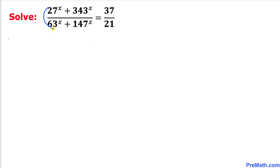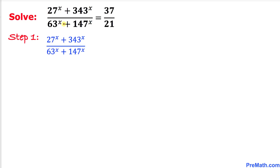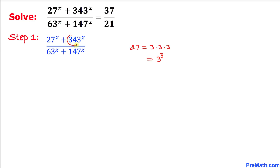Let's focus on the left hand side of this equation. We are going to manipulate the numerator and the denominator. First, 27 equals 3 times 3 times 3, which is 3 to the power 3. Next, 343 equals 7 times 7 times 7, which is 7 to the power 3.